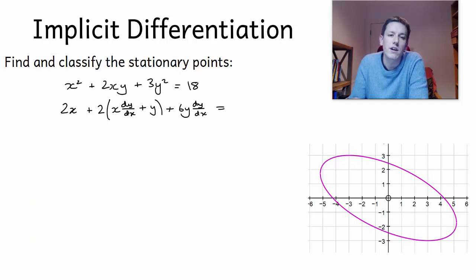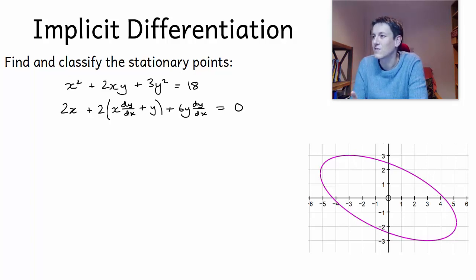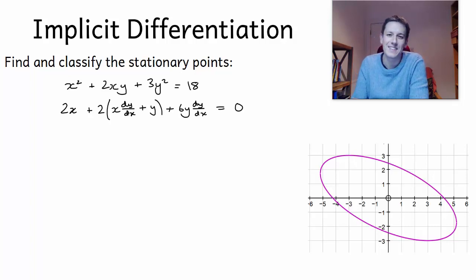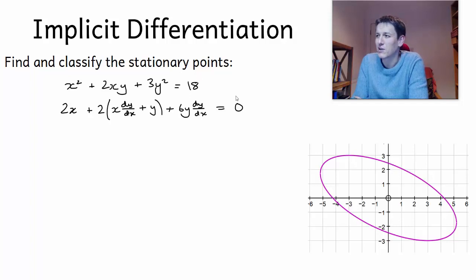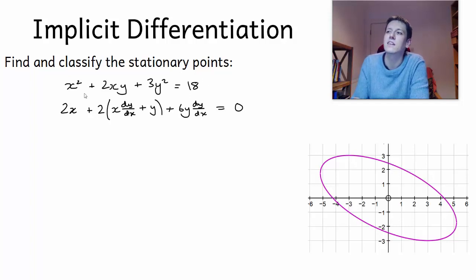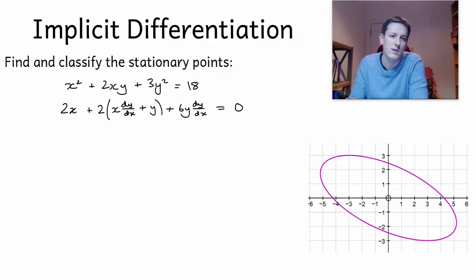On the right hand side I differentiate with respect to x to get 0. A common mistake in these questions is to forget to do the easy part, which is differentiating the 18 to get 0. You can really mess it up if you leave the 18 in here, or if you forget to differentiate the x squared term.